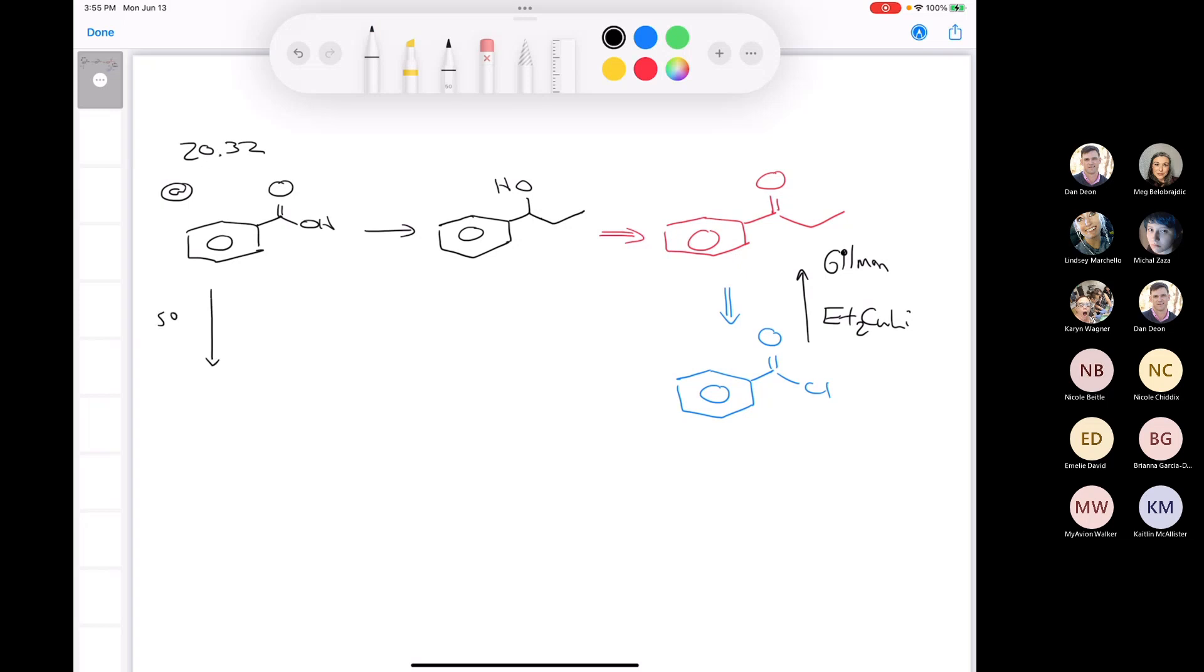First, we have to make the acid chloride using thionyl chloride, and then we can use the Gilman reagent to make the ketone. So, we would use the ethyl cuprate that gives us the desired ketone, and then we could just reduce it. Why don't we pick sodium borohydride? It doesn't get used a lot, and we could even pick a solvent. You could put methanol or something like that.